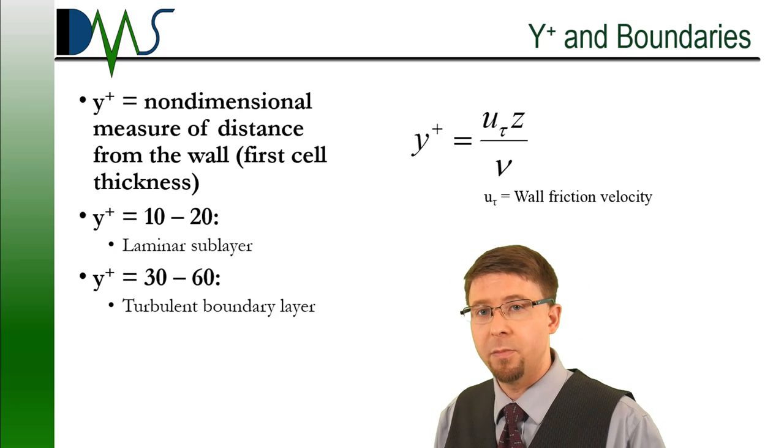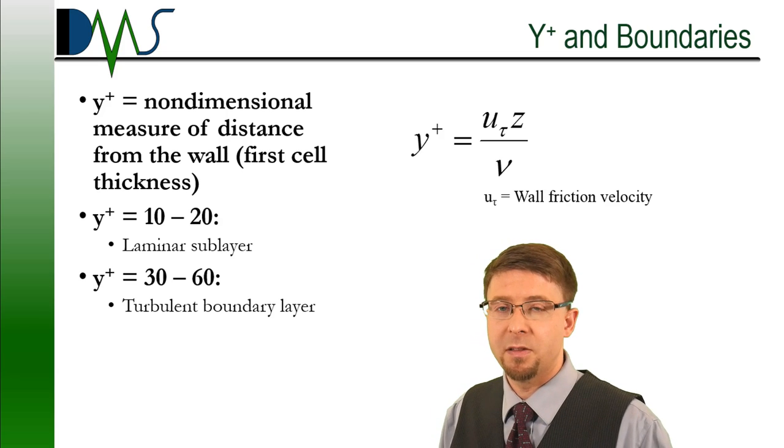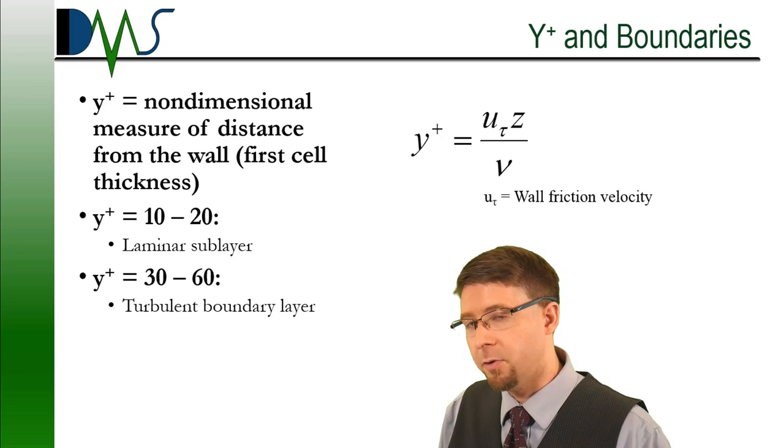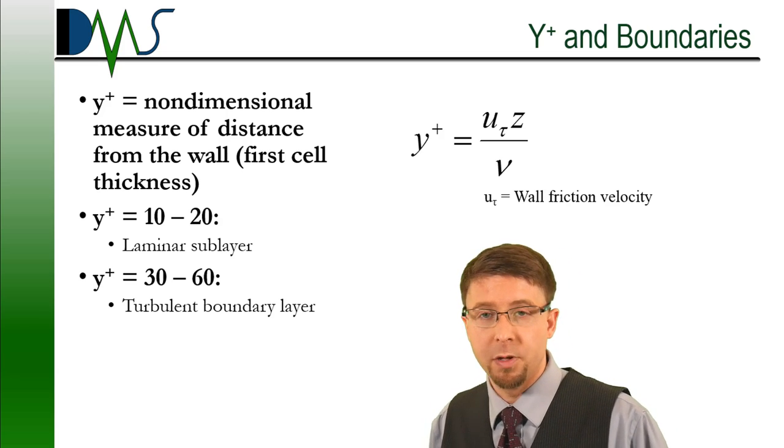And remember, the numbers that you're looking for are that 10 to 20, that's a laminar sub-layer. That 30 to 60 or plus, that's a turbulent boundary layer.